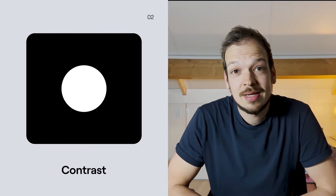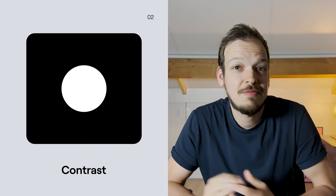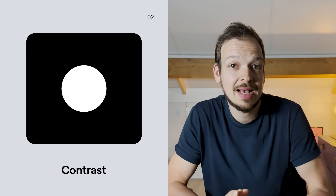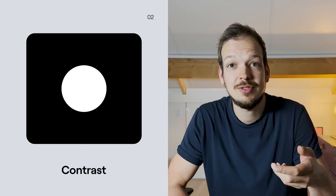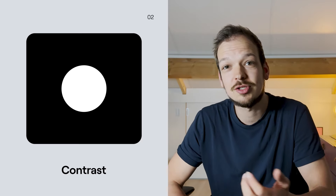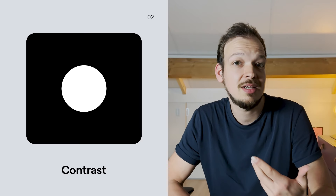The second principle is contrast. Contrast is like the spice of design — it adds flavor, depth, and visual interest to your compositions. By juxtaposing different elements such as color, size, or shape, contrast creates dynamic relationships that grab the viewer's attention. In this iconic example, a black square behind a white circle creates a bold visual statement, making the circle stand out prominently.